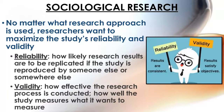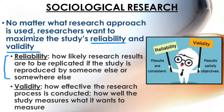No matter which research approach we choose in sociology, there are two main goals a sociologist strives for when publishing work: they want their study to be reliable and valid. Reliability refers to how likely research results can be replicated if the study is reproduced by someone else somewhere else. Validity is how effectively the research process is conducted.